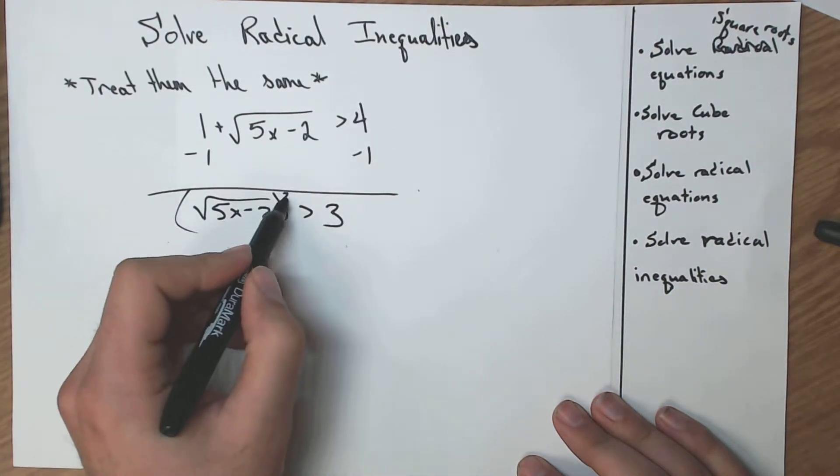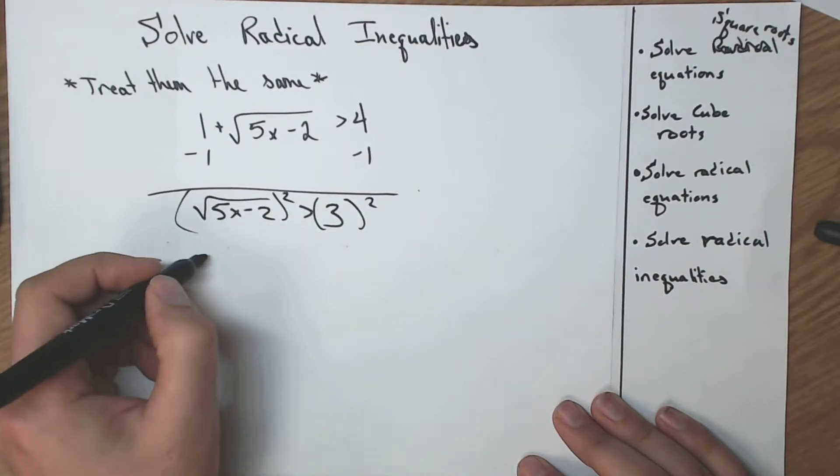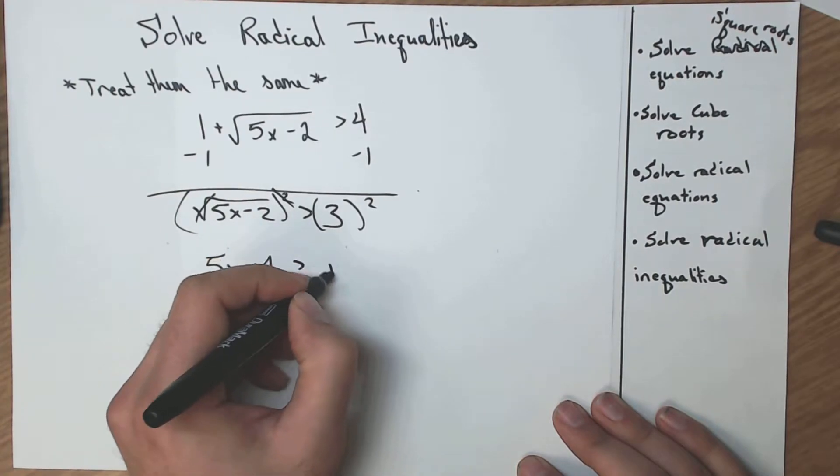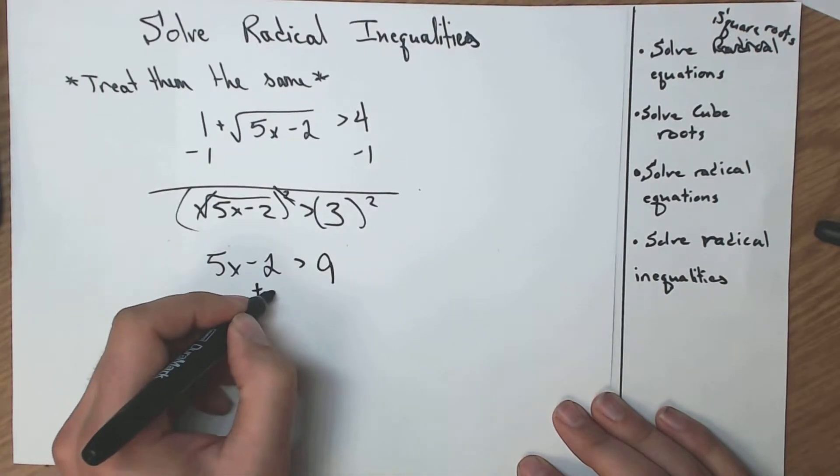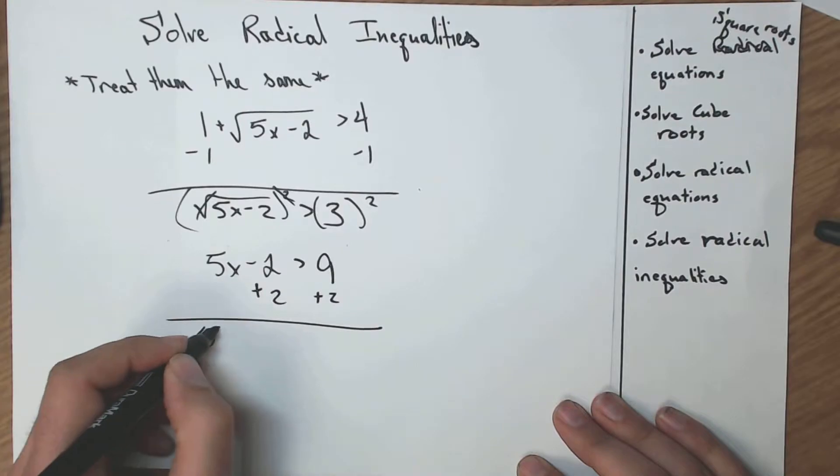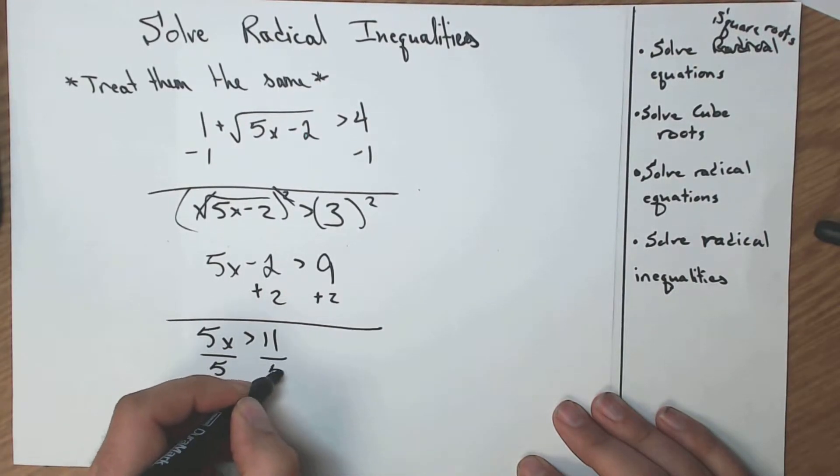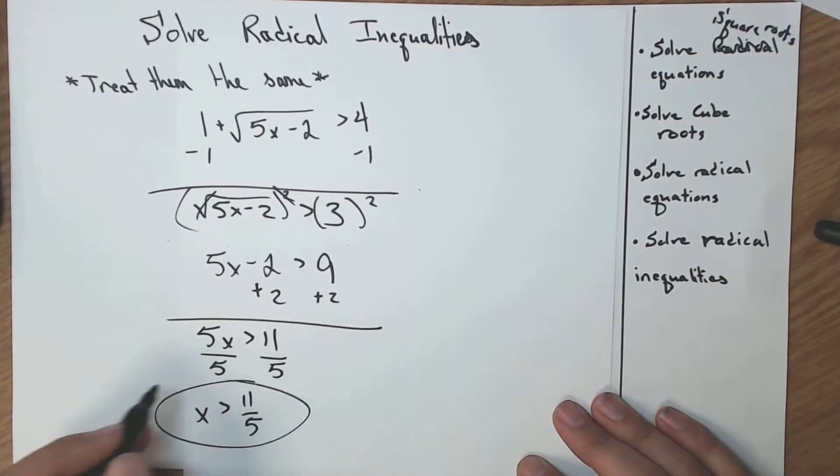I have to square both sides. 5x minus 2, because those just cancel, is greater than 9 plus 2. 5x is greater than 11. Divide by 5. 5x must be greater than 11 fifths. Awesome.